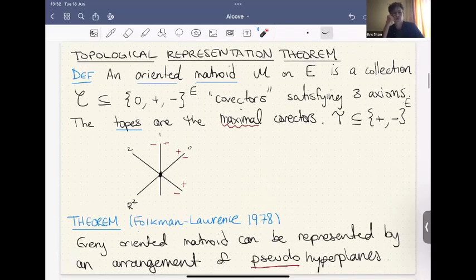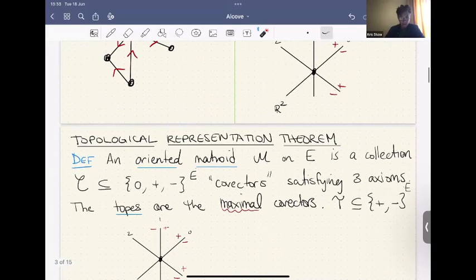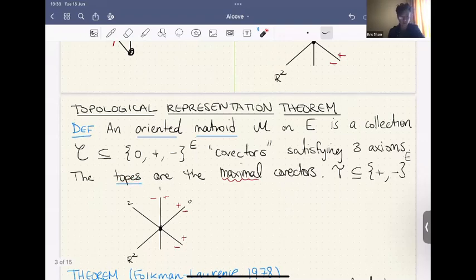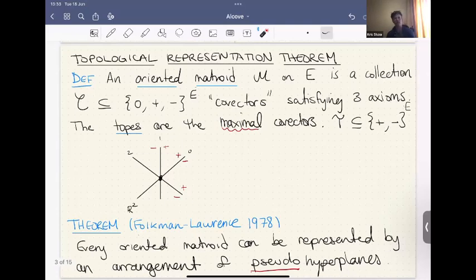So as with usual matroids, you can give an oriented matroid, you can describe an oriented matroid in various ways with various settings of axioms. So the language that I want to use is one of covectors. So this will be for an oriented matroid on some ground set E, which will be just the finite set. So think the collection of your hyperplanes or the edges of a graph. It's going to be a collection called C of, well, E-tuples that have values in zero plus or minus. These are called the covectors. And they'll have to satisfy three axioms, which I won't bother to write down because I'm going to give another equivalent description in a second that's much more geometric or topological. I'll get back to these topes in a second once we do an example.